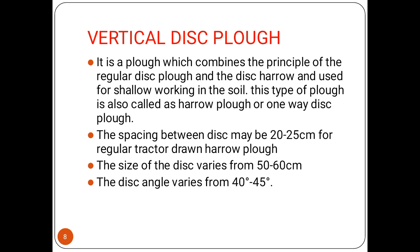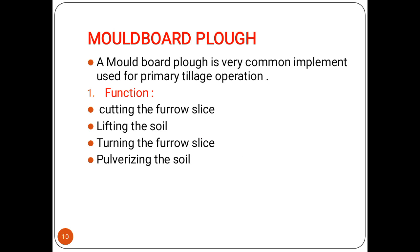The vertical disk plow combines the principle of the regular disk plow and the disk harrow, and is used for shallow working in the soil. This type of plow is also called the harrow plow or one-way disk plow. The spacing between the disks may vary from 20 to 25 centimeters for regular tractor-drawn harrow plows. The size of the disk varies from 50 to 60 centimeters, and the disk angle varies from 40 to 45 degrees.